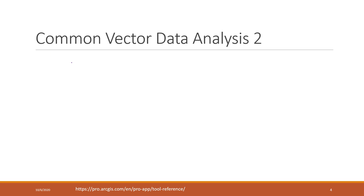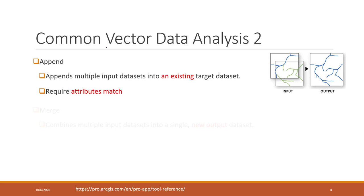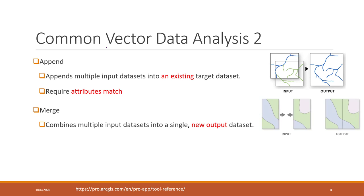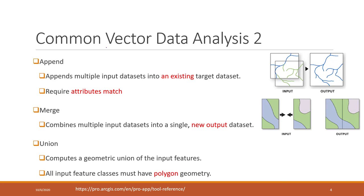Let's continue our second type of spatial analysis. We can select attributes, we can select features from features, and we can also combine multiple features together. To combine multiple spatial vector data together, we can use append, we can use merge, or we can use union — so there are three ways we can do that.